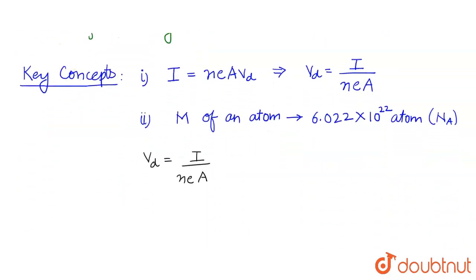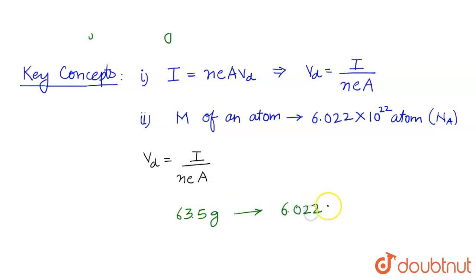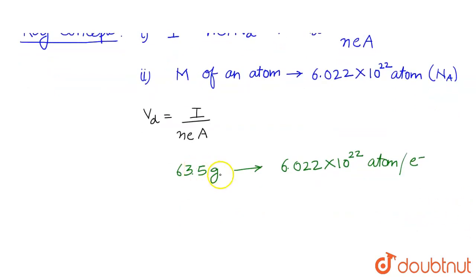Now let us use the second key concept, which says the atomic mass of an atom contains Avogadro's number of atoms. The atomic mass of copper is 63.5 grams, which contains 6.022 × 10²³ atoms. Since each atom contains one free electron, this same number gives the number of free electrons in 63.5 grams of copper.